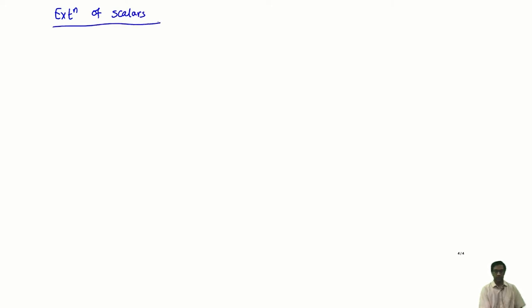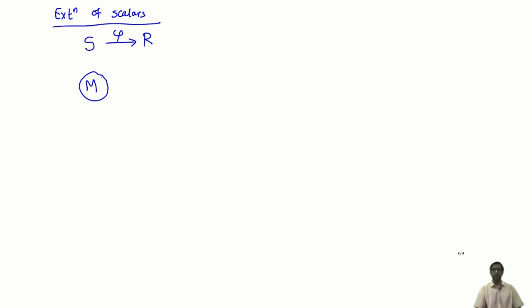The opposite problem is usually called extension of scalars. I have a homomorphism from S to R as before, but now I have an S-module M and I want to make it into an R-module. This is a much harder problem — you cannot do it as easily as before, because if you take an element of R there is no easy way of defining scalar multiplication: I cannot convert it into an element of S by applying a homomorphism — the homomorphism goes in the wrong direction. There is a way of doing this involving tensor products, but we will not get into that right now.